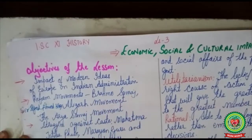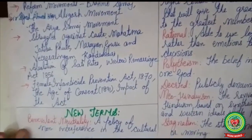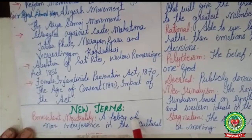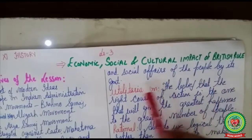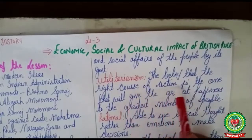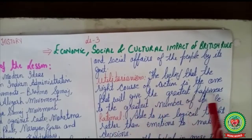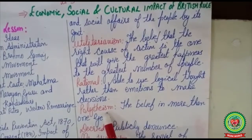Before going through our topic, we will understand the new terms. Benevolent neutrality: a policy of non-interference in the cultural and social affairs of the people by its government. Utilitarianism: the belief that the right course of action is the one that will give the greatest happiness to the greatest number of people. Rational: able to use logical thought rather than emotions to make decisions. Polytheism: the belief in more than one god.